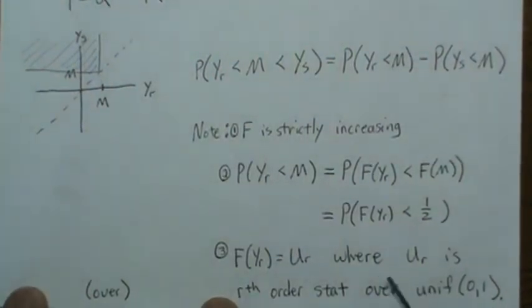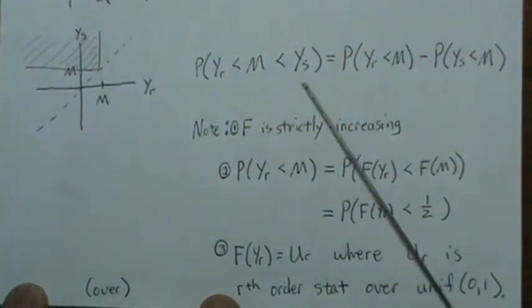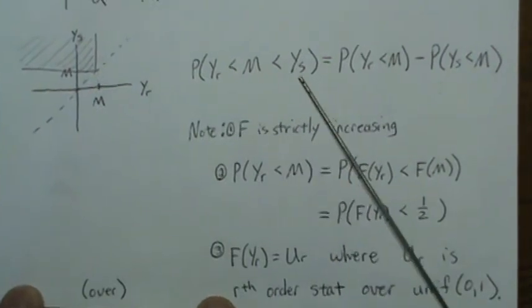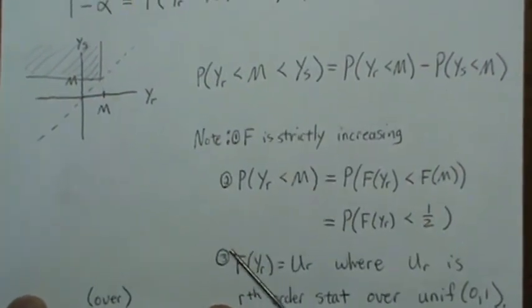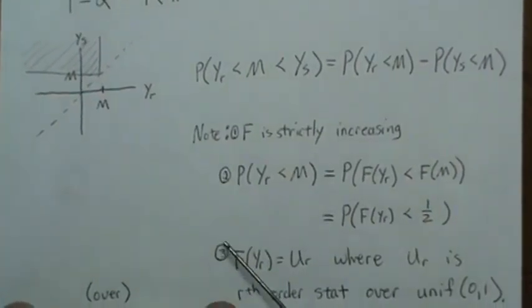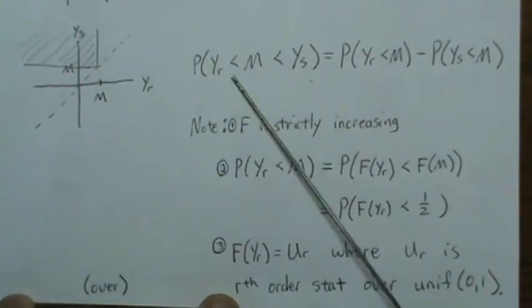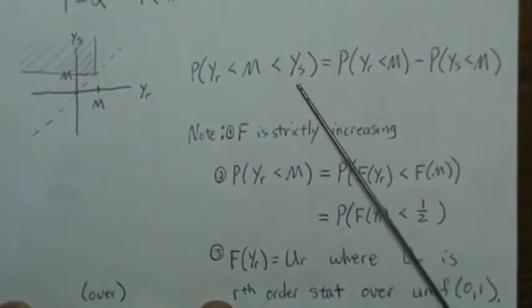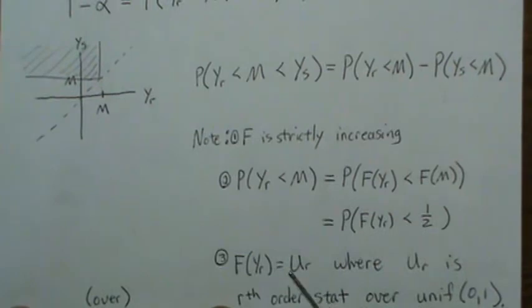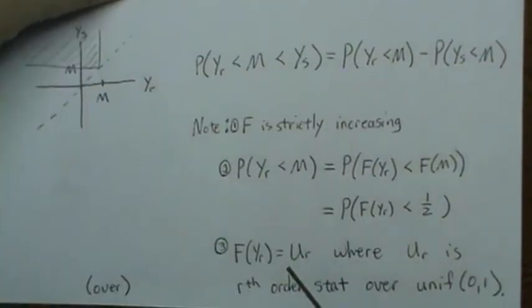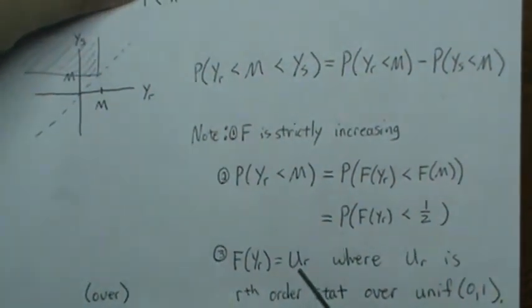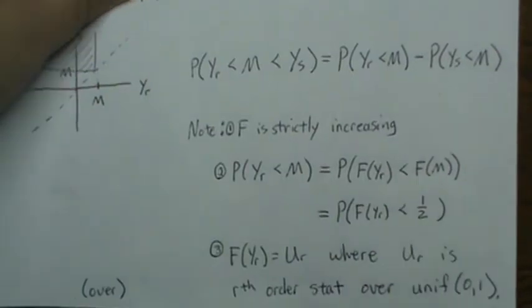So while the original probability, we think depends upon the original F, the original distribution of our data, it ends up not being dependent upon the original distribution. It just depends upon the uniform distribution, the Rth order statistic from a uniform distribution.